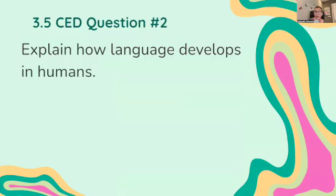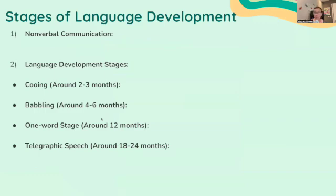The second CED question is: explain how language develops in humans. We're going to look at the stages of language development. First, nonverbal communication — infants and young children use gestures like pointing to communicate before they even develop formal language. Then language development appears in stages: cooing around two to three months, where infants produce sounds like 'ooh' or 'ah,' followed by babbling around four to six months, where they start combining consonants and vowels — 'baba,' 'dada,' 'mama.'